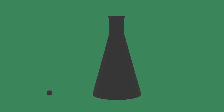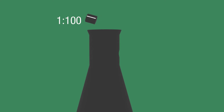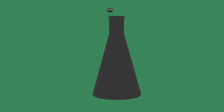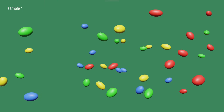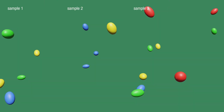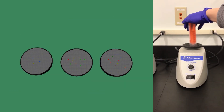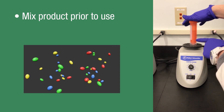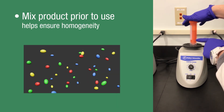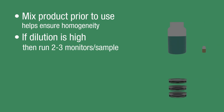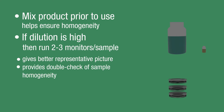A note of caution when using dilutions: testing small amounts of sample in large amounts of sterile buffer, such as 1 to 50 or 1 to 100, is possible and might even be necessary. However, increased dilution makes ensuring a representative sampling more difficult. Here's an example of how plates can vary if a sample isn't homogeneous. To address this potential issue, it's best to mix the product prior to sampling to make sure it is well homogenized. If using high dilutions, running 2 to 3 monitors per sample gives a better representative picture and provides a double check of sample homogeneity.